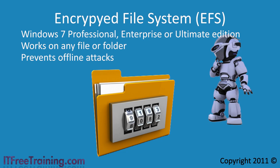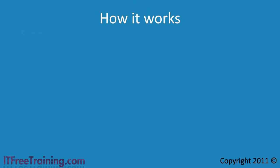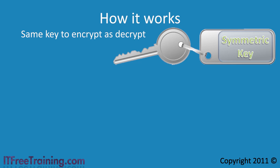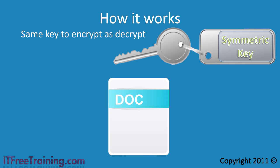To make EFS fast, it uses a symmetric algorithm. This essentially means it uses the same key to encrypt the file as to decrypt the file. You may be wondering where this key is stored — well, it is stored in the file that you want encrypted.